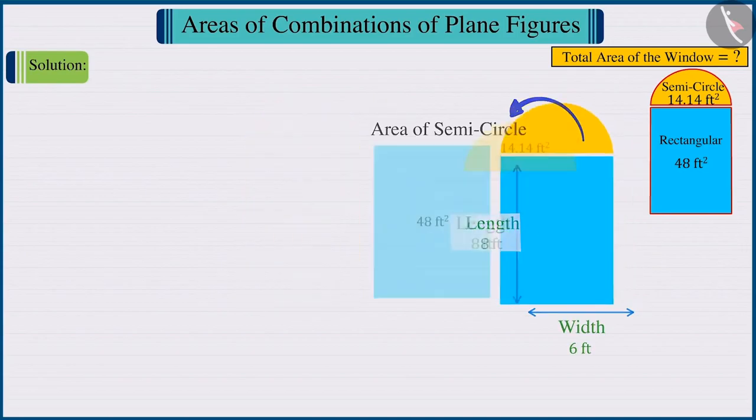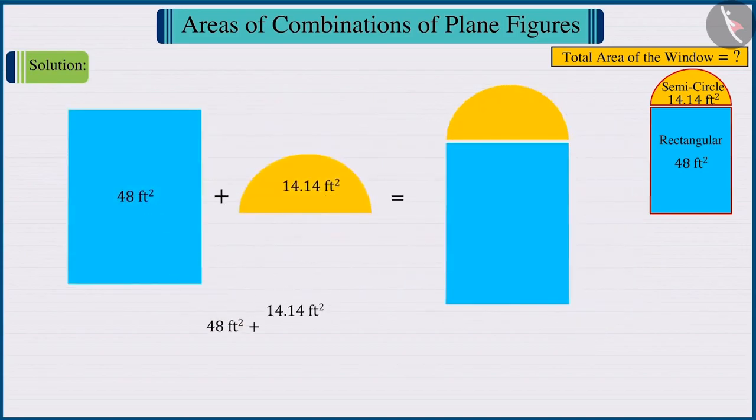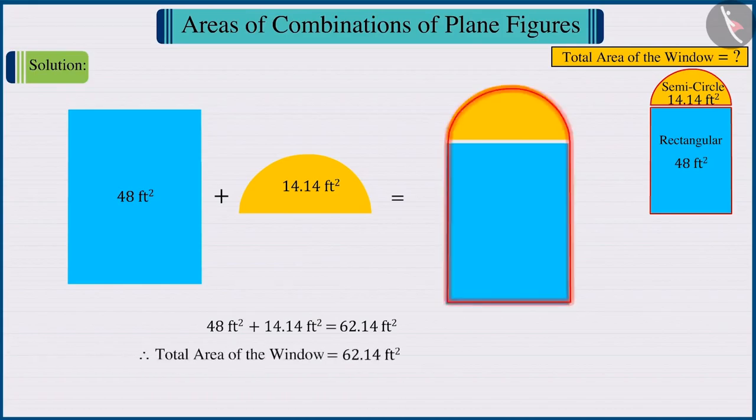If we add the areas of these two figures, then we get the total area of these as 62.14 square feet. From this, we can say that the total area of the window is 62.14 square feet.